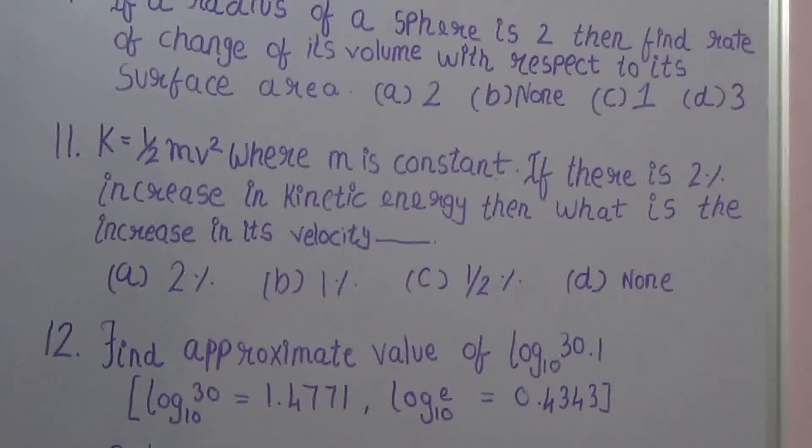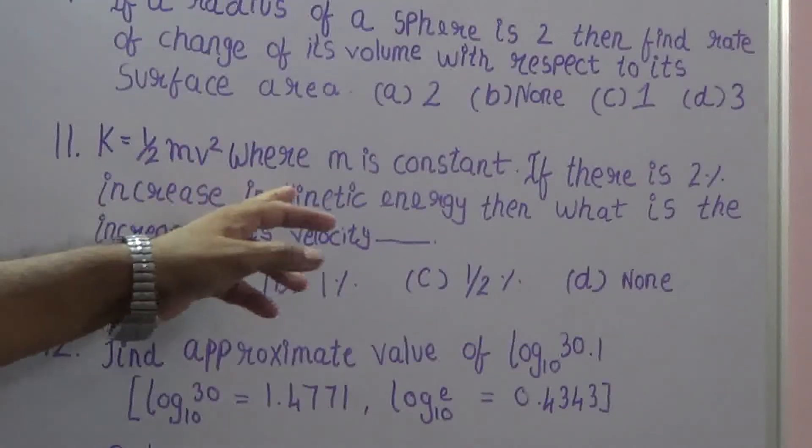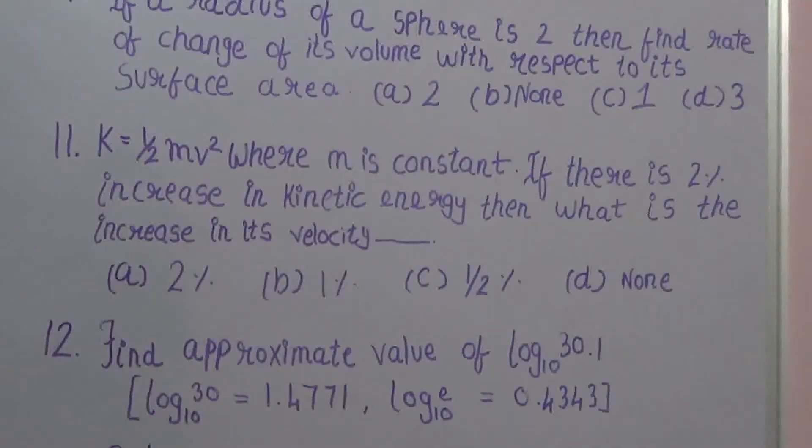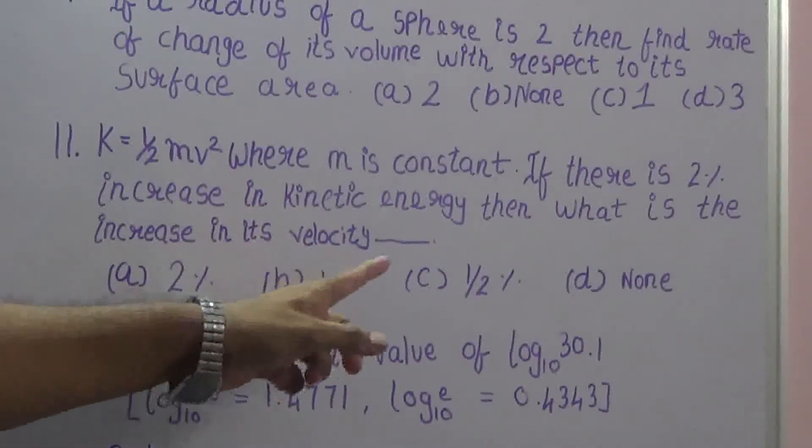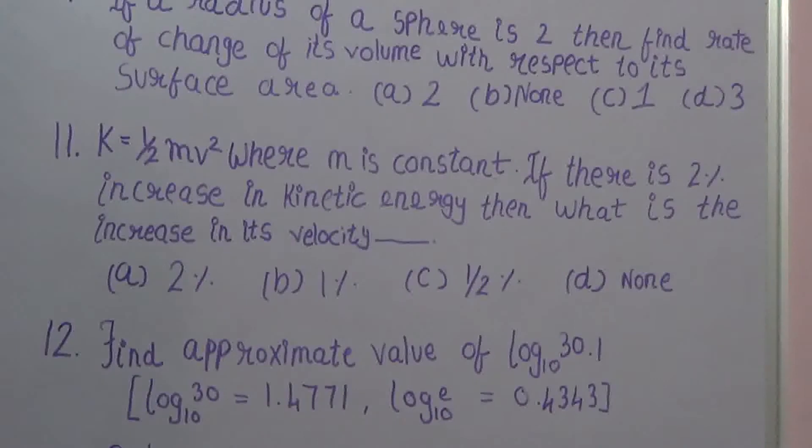Look, question number 11. K equals to half mv square. K equals to half mv square where m is constant. If 2% increase in kinetic energy, K stands for the kinetic energy, then what is the increase in its velocity?